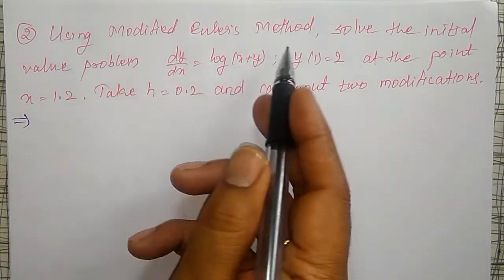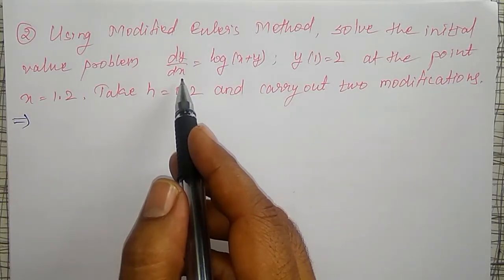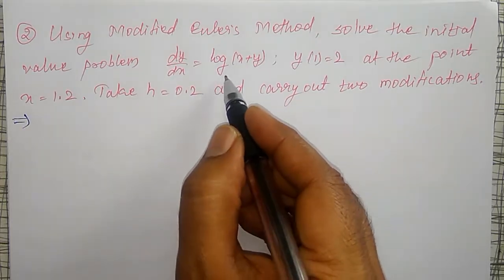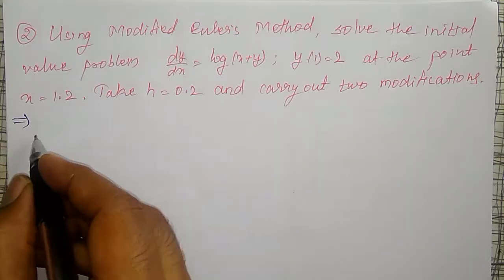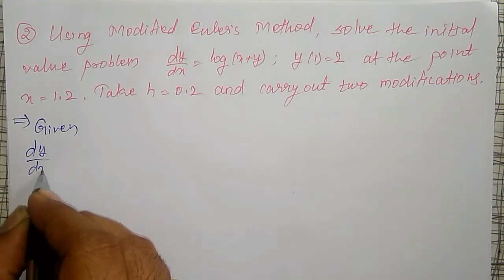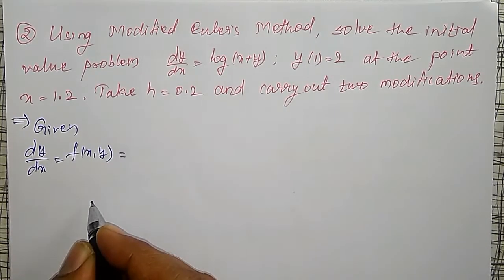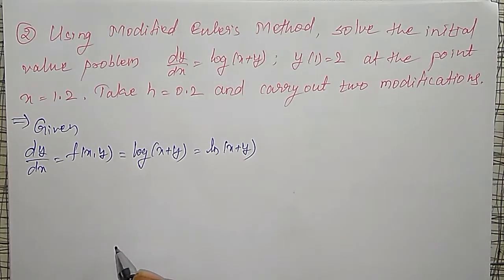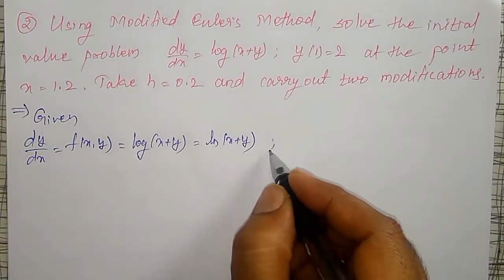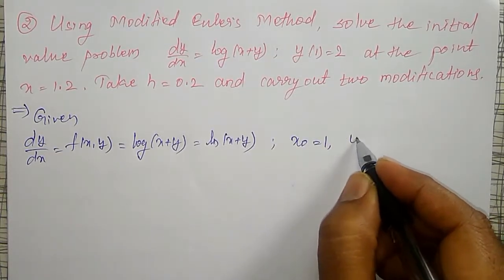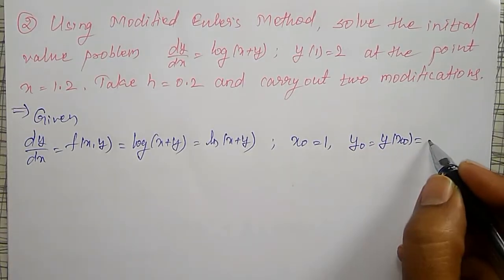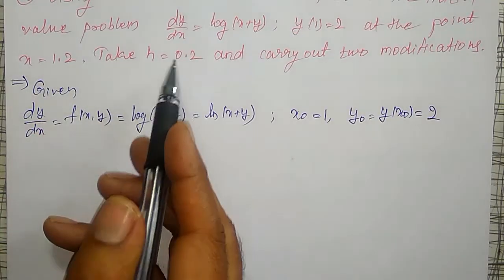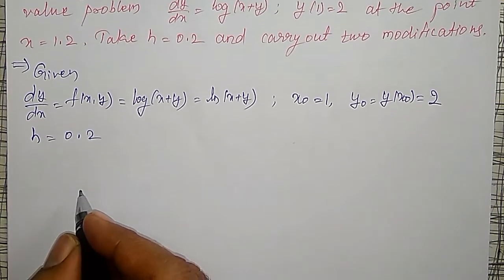I am going to use the Euler modified method. Here, dy/dx is nothing but to the base e — log is ln base e. If they are particularly mentioning base 10, then you use that. Given: dy/dx equal to f(x, y) equal to log of x plus y. In your calculator, use ln of x plus y. Given x0 equal to 1, y0 equal to y at x0 equal to 2, and h equal to 0.2.